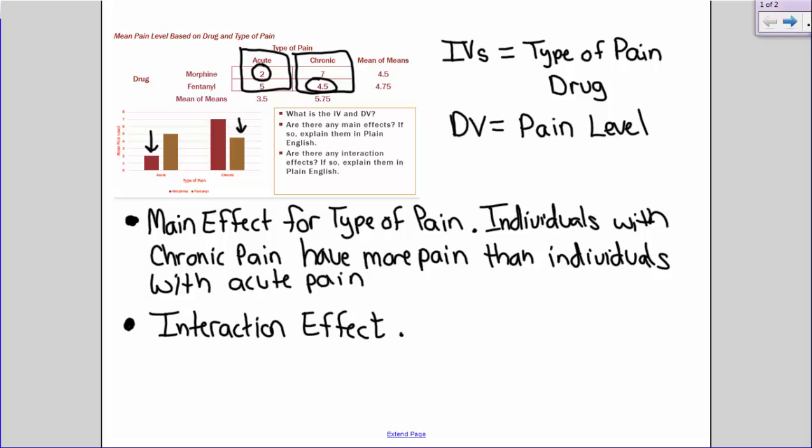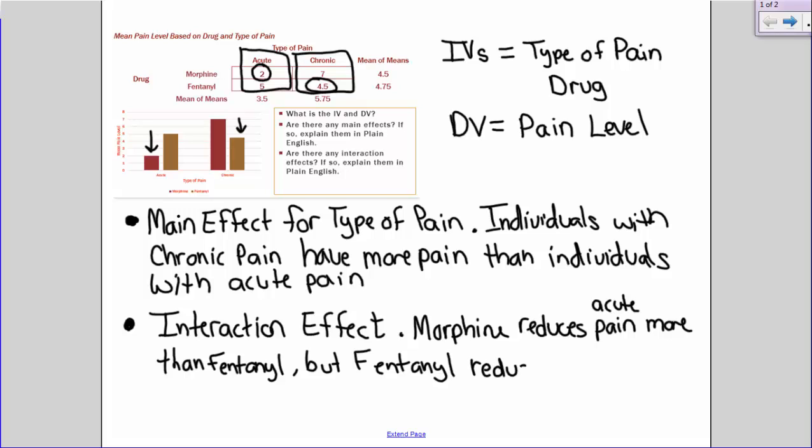So let's see. Morphine, let's say it reduces pain, just to get the fact that we're looking at lower numbers. Morphine reduces pain, and let's be specific, acute pain more than fentanyl, but fentanyl reduces chronic pain more than morphine. That's it, you're done.